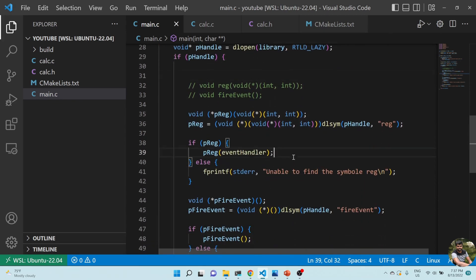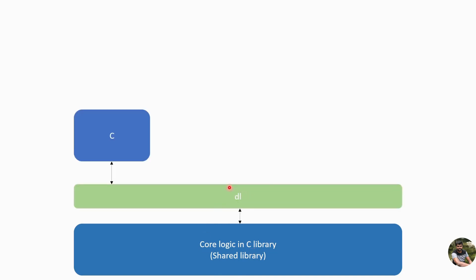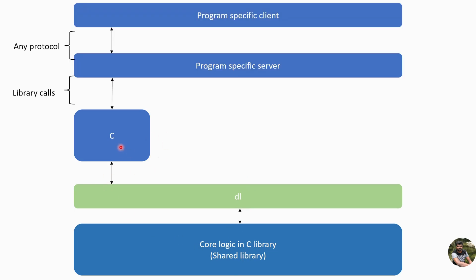Now, what is the use of all this? You have a core logic in a C shared library, and you use dlopen/dlsym from the dl library — a system library on Linux — to call functions inside that shared library. You write your C library, which internally calls this dl library, and you expose it to different programs.